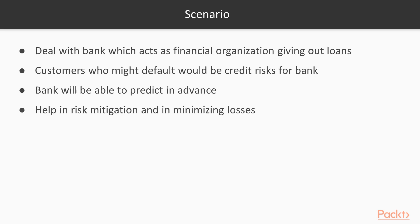In our case we'll be dealing with a bank which acts as the financial organisation giving out loans to customers who apply for them. Hence customers who might default on a loan payment would be credit risks for the bank. By analysing customer data and applying machine learning algorithms on it, the bank will be able to predict in advance which customers may be potential credit risks, helping in risk mitigation and minimising losses.